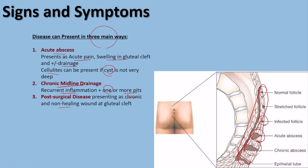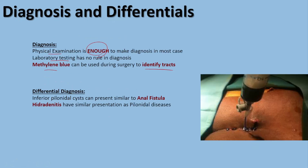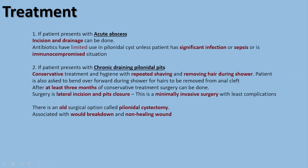As shown in the picture, the disease results in tube and sinus formation, and the surgeon uses methylene blue to identify the tracts in the gluteal area. The differential diagnosis includes anal fistula, which can present very similarly to an inferior pilonidal cyst, and hidradenitis, which is inflammation of the glands in the gluteal area.